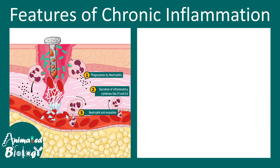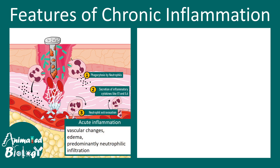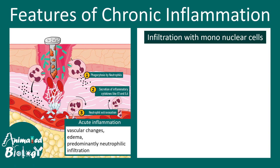One of the biggest distinguishing features between chronic and short-term acute inflammation is the cell types. On the left side you can see a nail has pricked into skin and attracted a lot of neutrophils because the nail had bacteria along with it. Neutrophils are one of the key cell types associated with acute inflammation. In acute inflammation there are vascular changes, edema, and predominantly neutrophilic infiltration at the tissue site.